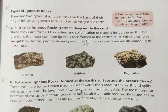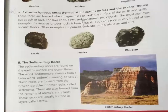The next type is extrusive igneous rocks, formed at the Earth's surface and the ocean floor. These rocks are formed when magma rises towards the surface of the Earth and spills out as ash and lava. The lava cools down and transforms into crystals. The most common example of extrusive igneous rock is basalt. Basalt is a volcanic rock mostly found at the ocean floor. Other examples are pumice, scoria, obsidian and tuff.